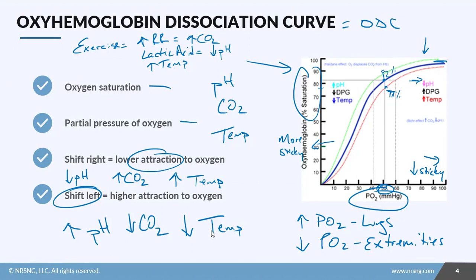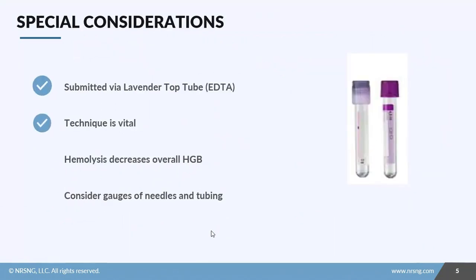It's not super black and white, but these will help you make predictions about the outcomes of your patient, and it'll help you make better planning for your patient. What kind of special considerations do we need to think about when we're drawing these blood samples? First off, you're going to test it in a lavender top tube, which has the EDTA, which is an anti-clotting additive.